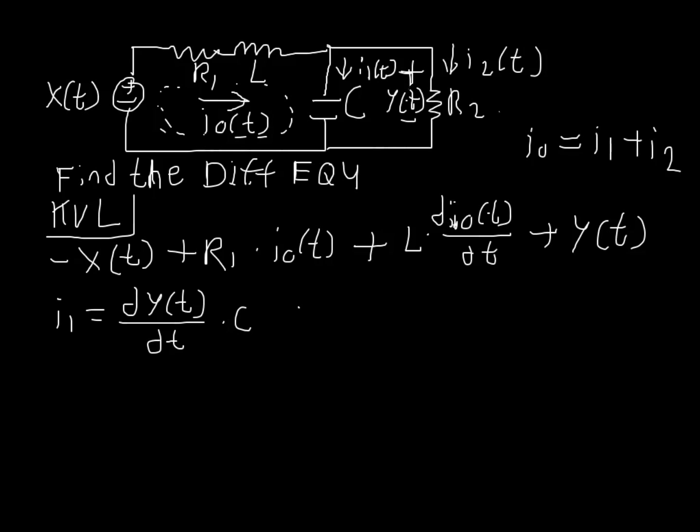And then we can solve for i2 in a very similar way, which is much simpler in my opinion, because it's just the voltage y sub t over resistance. So with this, we can actually solve for what i0 is, i sub 0 if you will.